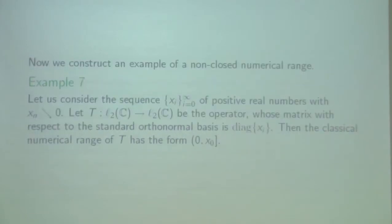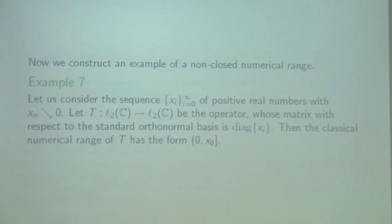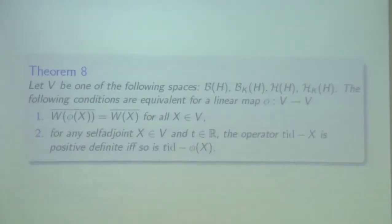The next example is quite important because in the case of infinite-dimensional space H, we can construct an example with a non-closed numerical range. We consider a sequence of positive real numbers decreasing to 0, and look at T as an operator whose map is an infinite-dimensional diagonal matrix. Then the classical numerical range has the form as you can see.